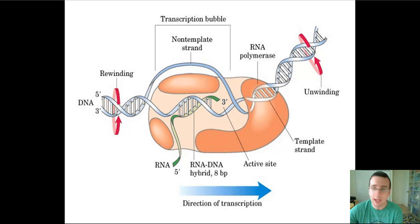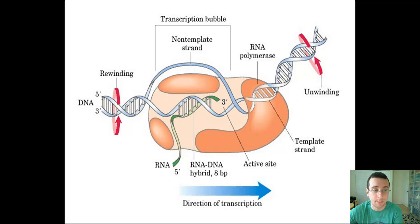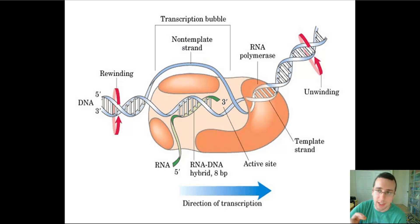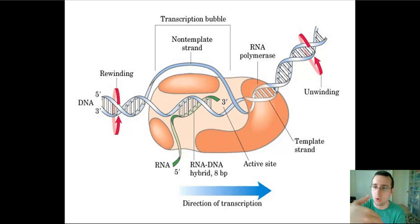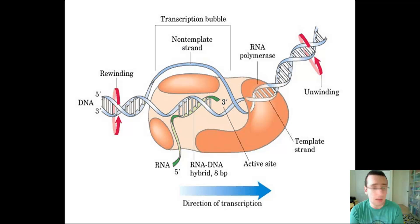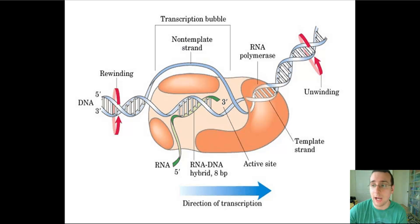The strand inside the RNA polymerase is called the template strand, and the strand on the outside is called the non-template strand. After the RNA polymerase travels through a segment, it creates a hybrid of RNA and DNA that eventually disconnects and forms the RNA that exits the RNA polymerase. Behind it, the DNA zips back up and rewinds back to normal.